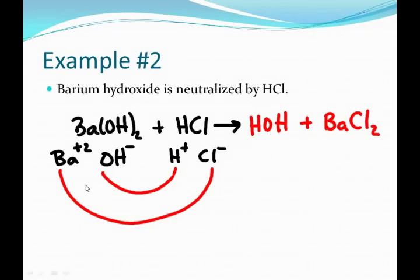Again, to balance, I have two hydroxides for one hydrogen, so I need a two in front of that. And then the number of waters that I make should match the number of hydrogens and hydroxides that I have, and then my reaction is balanced.